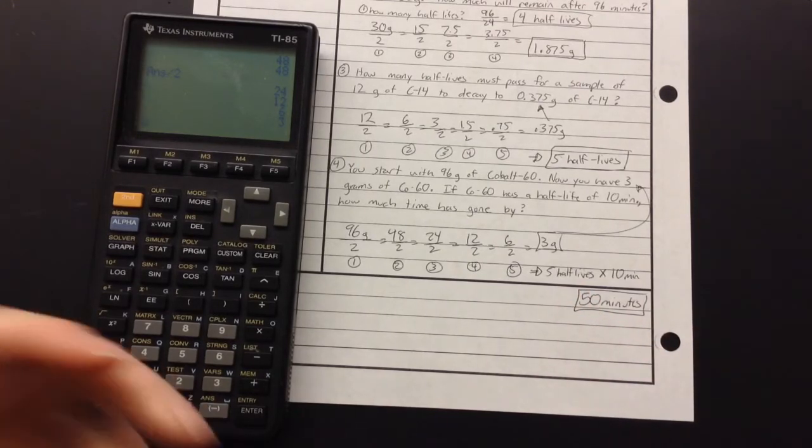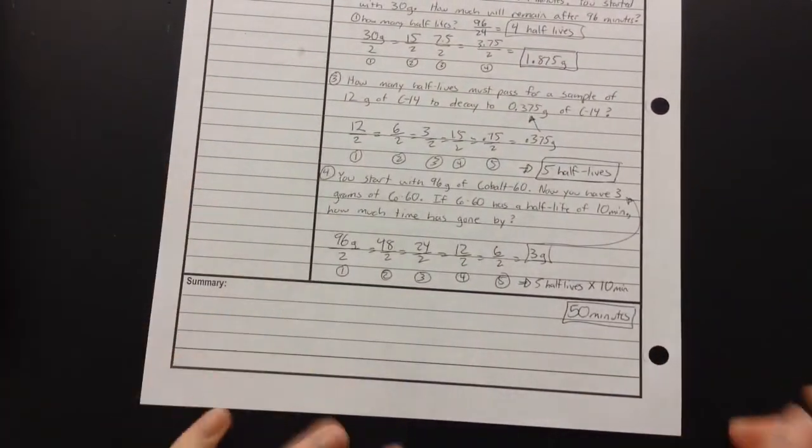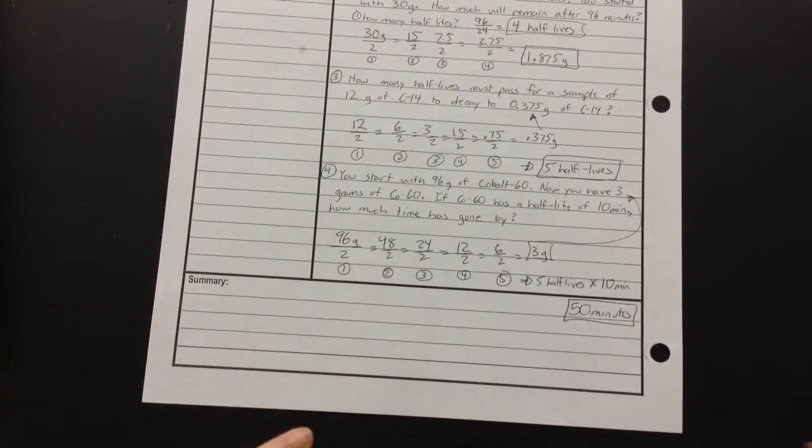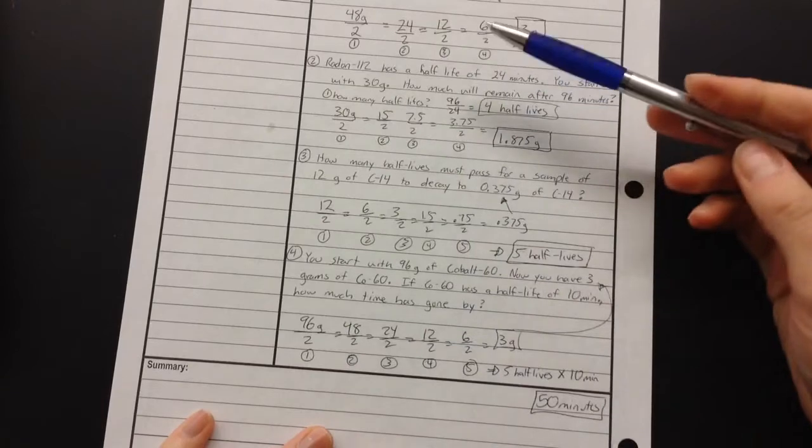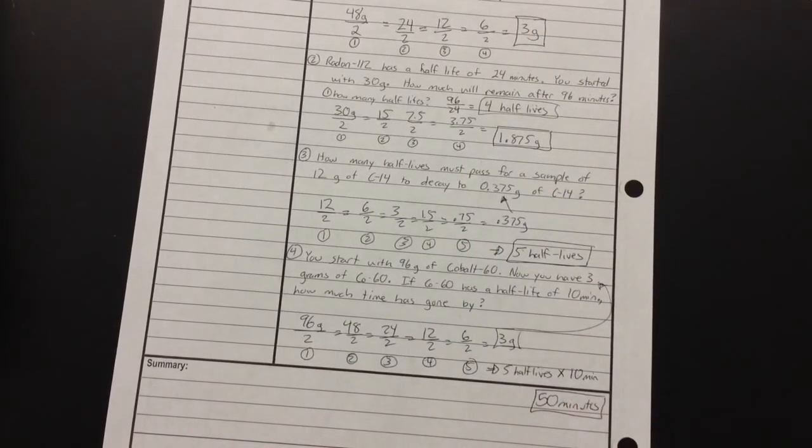So that's how you do calculations with half-lives. Sure, it does get a little messy dividing by 2 over and over again. Just keep track of how many times you're dividing by 2, and everything will work out okay. Thanks for watching. Let me know if you have any questions.